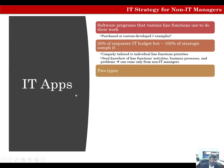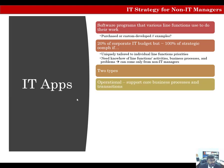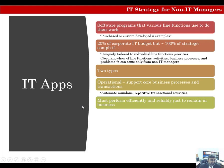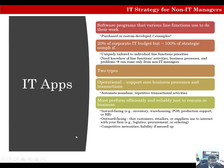There are two kinds of apps: operational and strategic. Operational apps support core business processes or transactions and can cross-cut line functions — they automate repetitive transactional processes and must be performed efficiently and reliably just to remain in business. They can be inward-facing, such as inventory, warehousing, point of sale, or payroll, or outward-facing, like mobile tools or websites. Operational apps are competitive necessities — if you mess them up, they can be a huge liability. A typical enterprise resource planning system can cost millions of dollars, and operational apps are often commodities, but expensive ones.